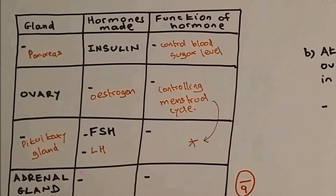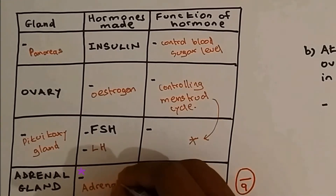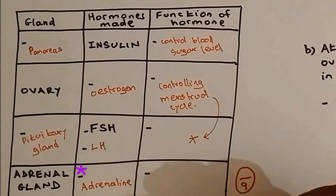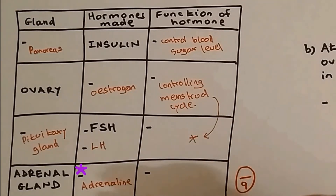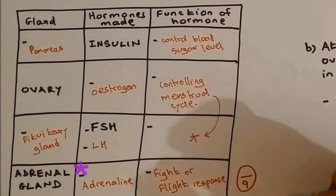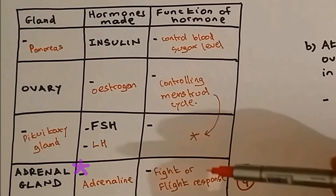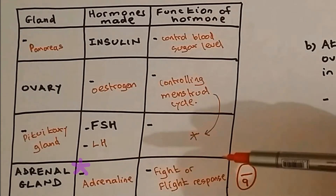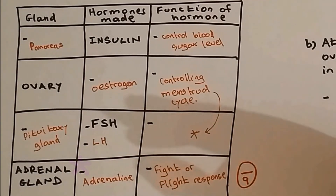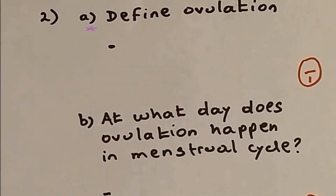The hormone made from the adrenal gland is adrenaline. The function of adrenaline is to create the fight or flight response. Adrenaline increases the heartbeat and breathing rate, making us ready to perform action — either to run off or to fight back. It is released when we are under stress or when we are scared.